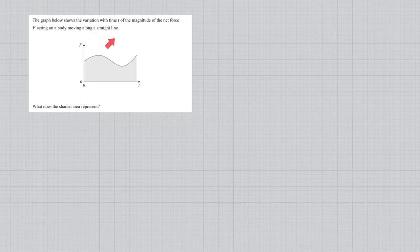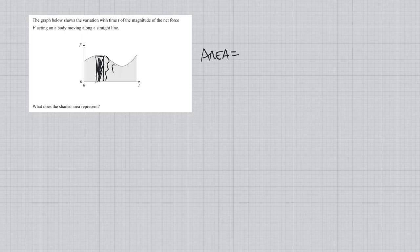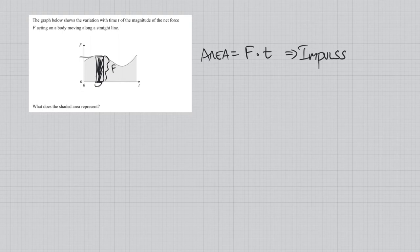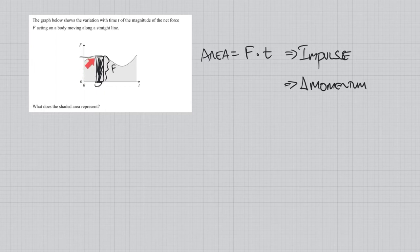This question: a graph shows the variation of the magnitude of net force on a body versus time. What does the shaded area represent? The area of the shaded region equals force multiplied by time, which is the impulse. This equals the change in momentum. This concept is useful even when the force is not constant — if we can find the area under the force-time graph, we can determine the impulse and therefore the change in momentum.